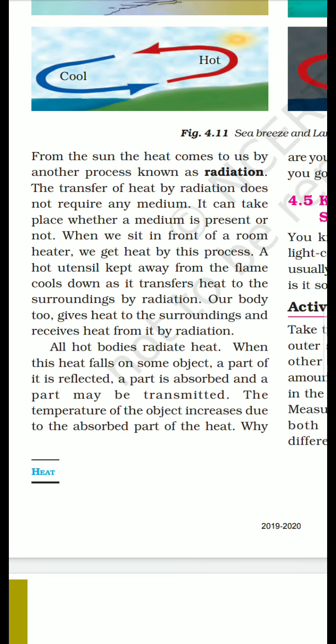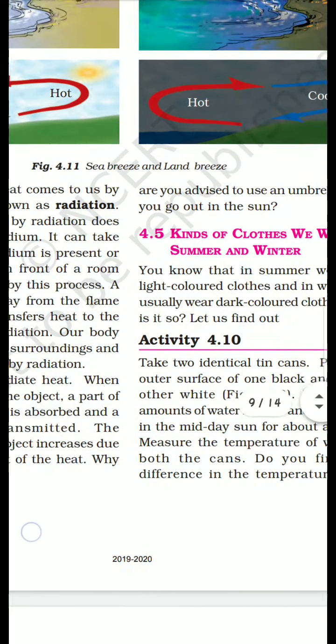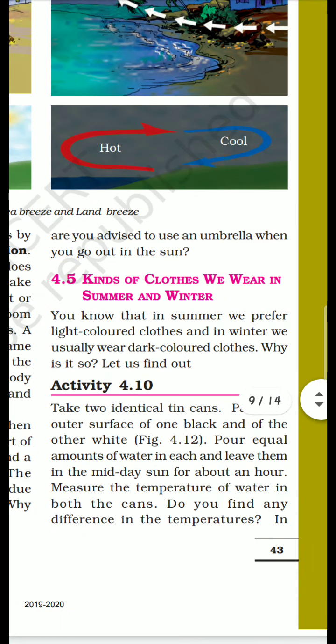So all hot bodies radiate heat. When this heat falls on some object, part is reflected, part is absorbed, and part may be transmitted. Jab bhi ek jagah se doosri jagah radiation ke through koi bhi heat pass hoti hai, toh ya toh woh reflect hogi — yani lag ke wapas aa jaana — ya phir absorb ho jaayegi — yani woh poora absorb kar lega, completely heat ho jaayega — and the third one is transmitted, yaani aur aage ki taraf pass ho jaayega. The temperature of the object increases due to absorption.